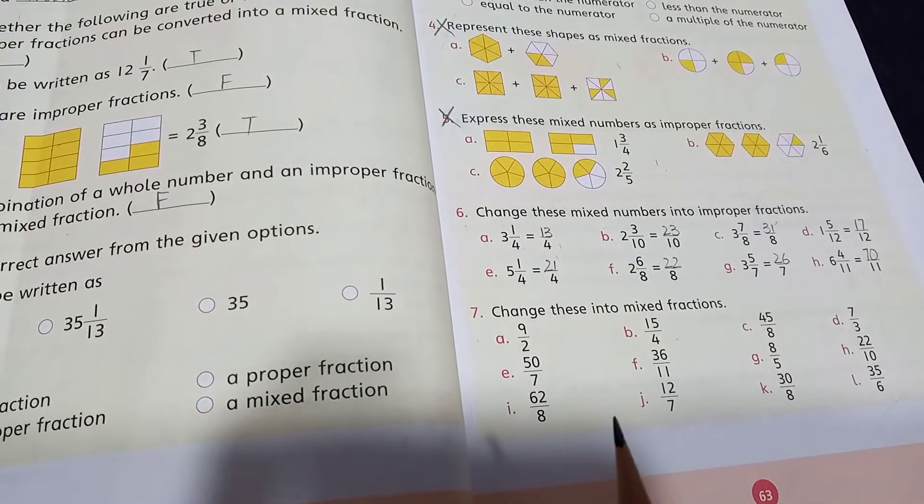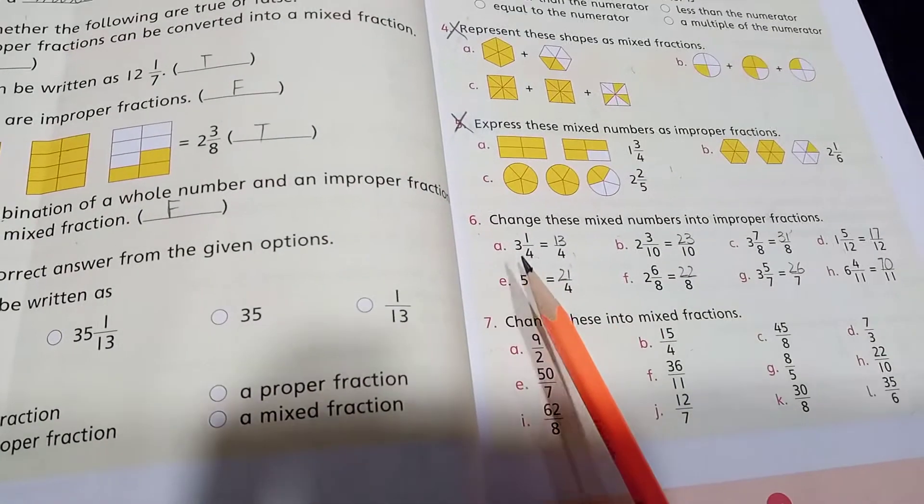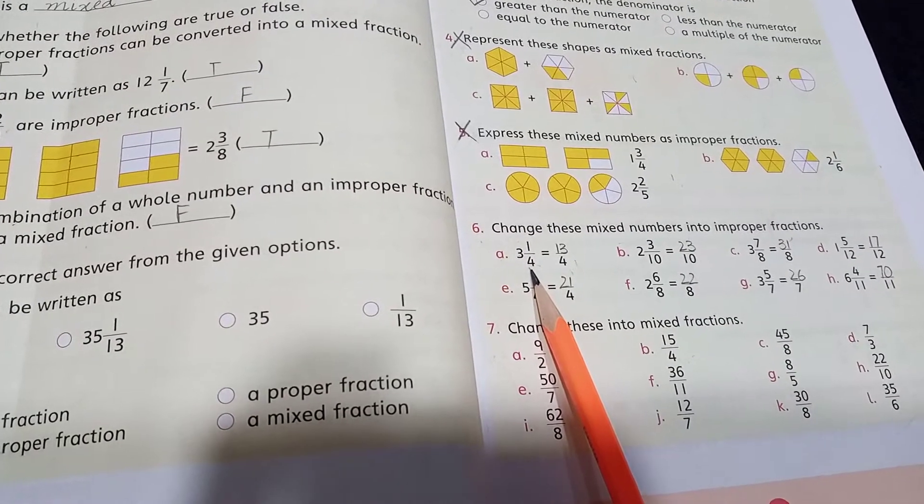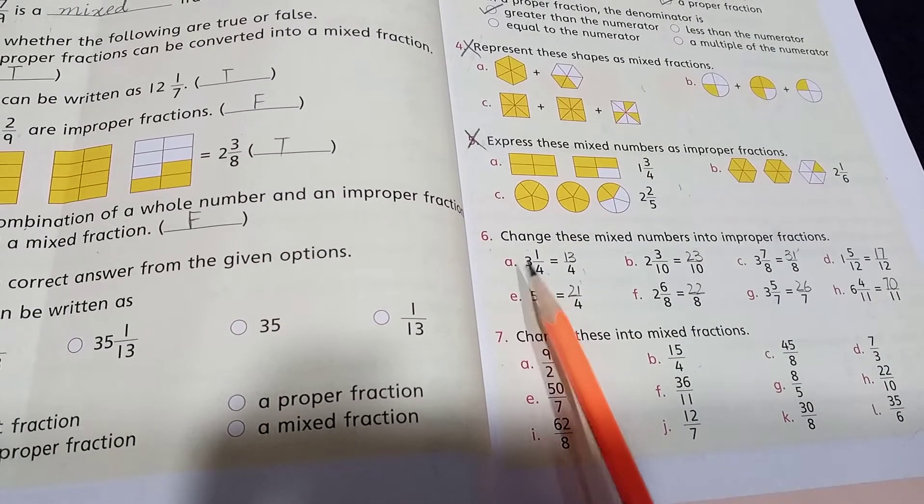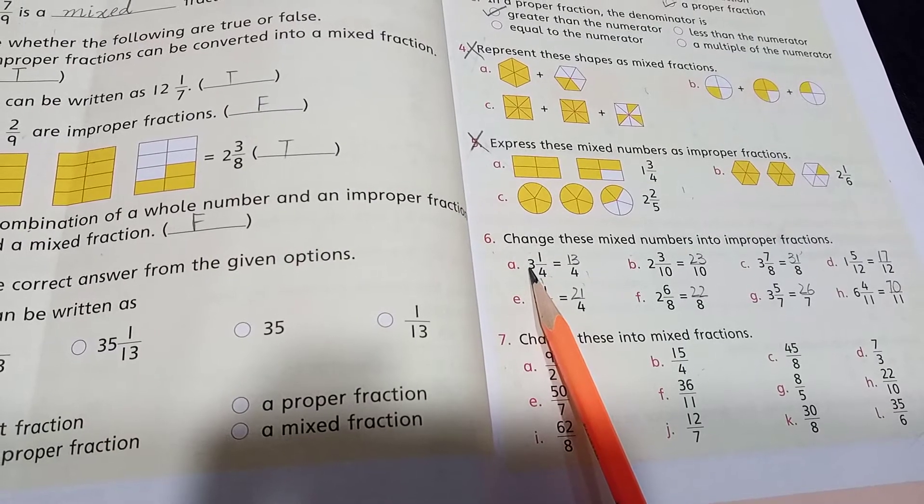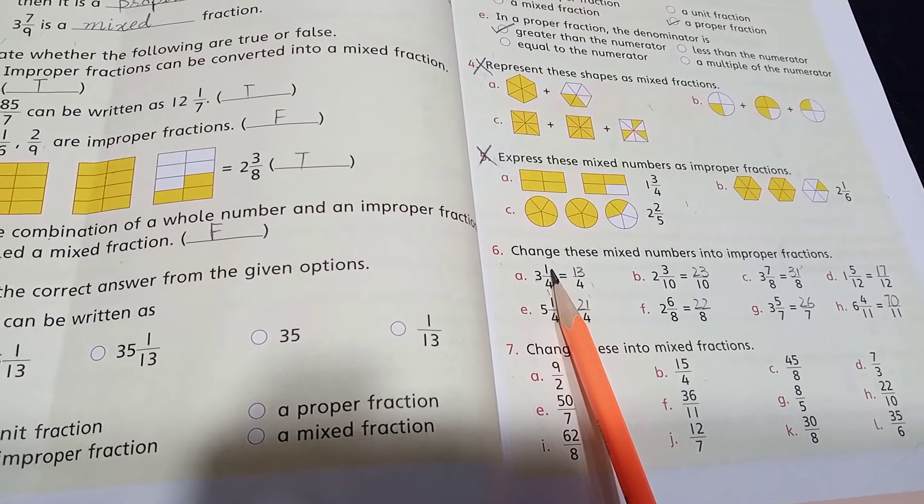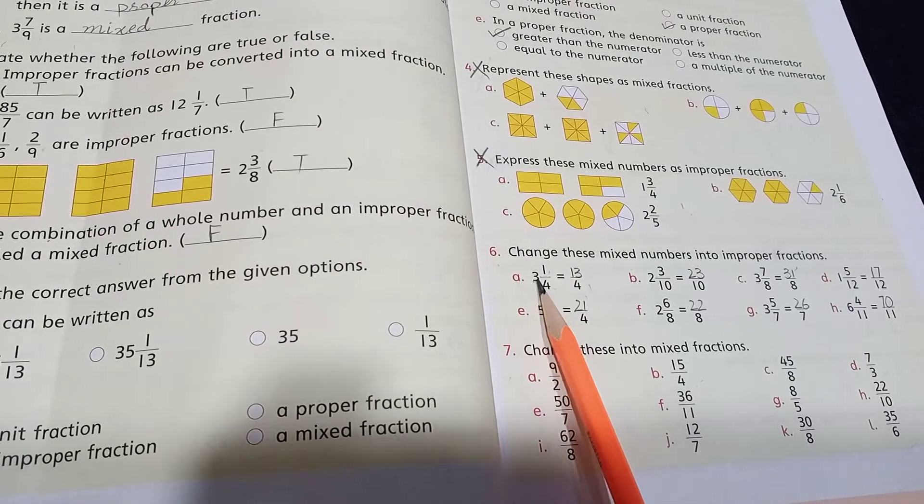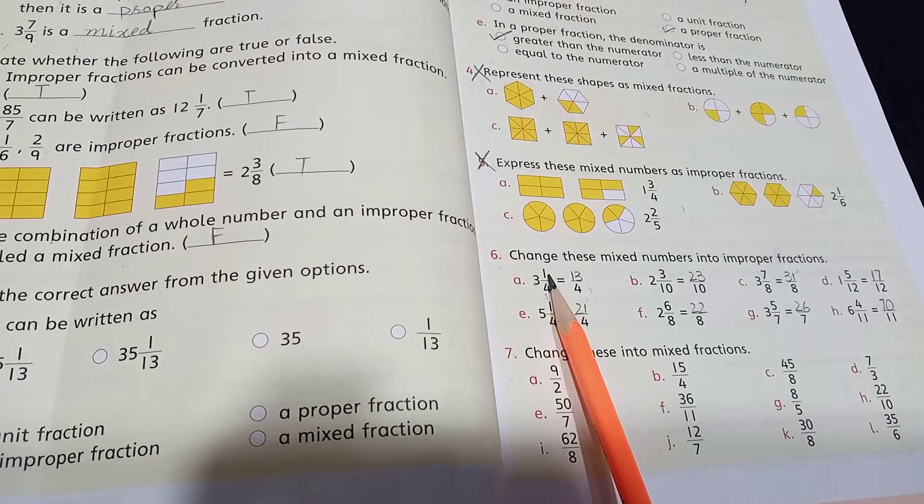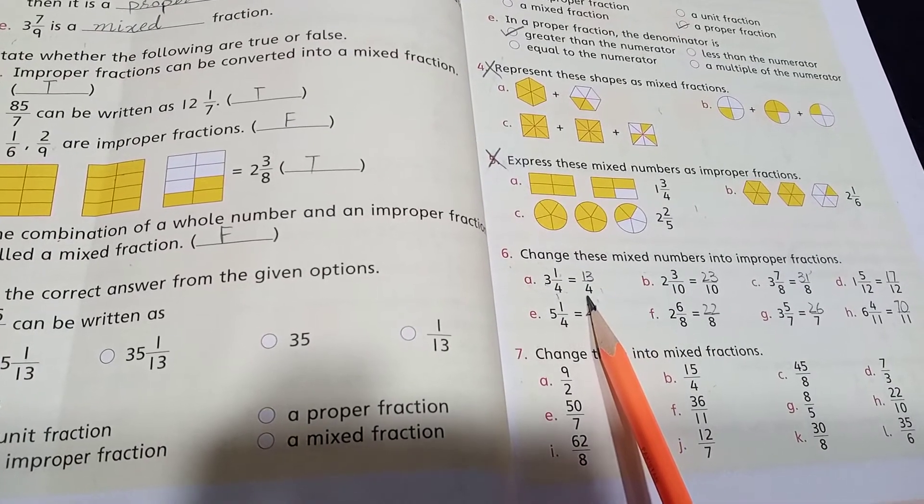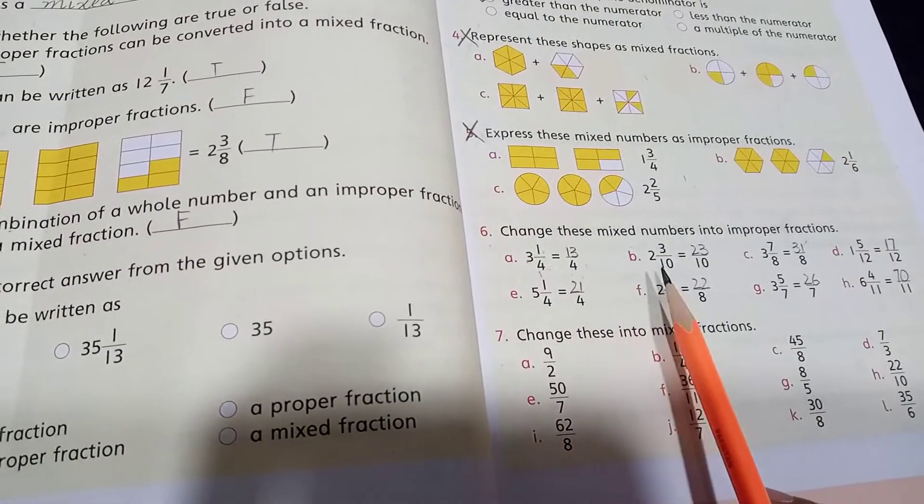First of all we will multiply the denominator of proper fraction with the whole number. 3 times 4 is 12. Then we will add the numerator of proper fraction. 12 plus 1 is 13. So the answer is 13 by 4.